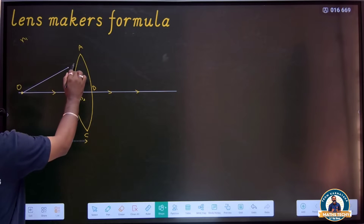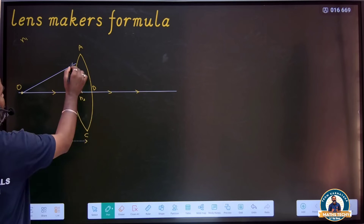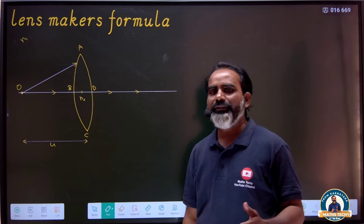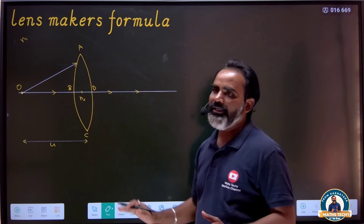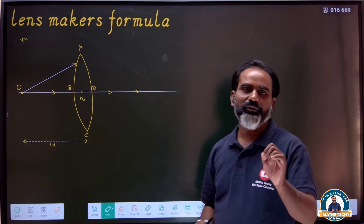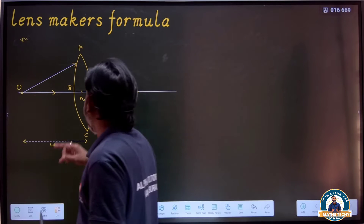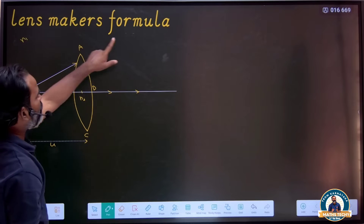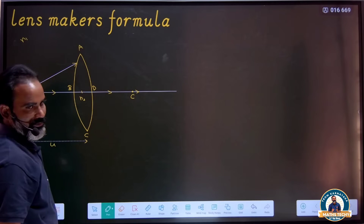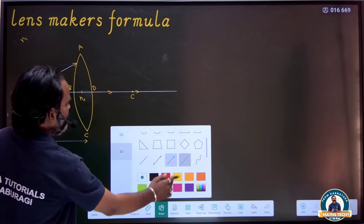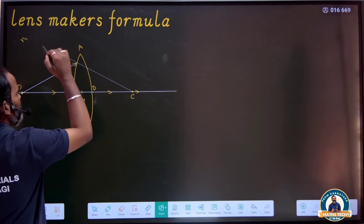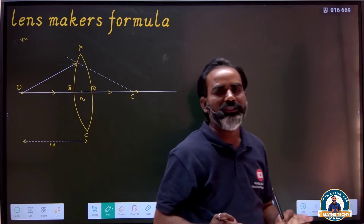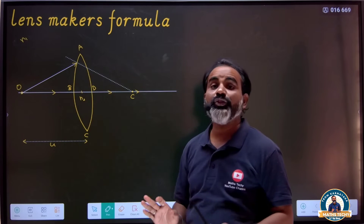One ray is incident here. If I want to make a bending, I want to draw a normal. It is a perpendicular line, but for a spherical surface, to draw the normal we draw a line through the center of curvature. This ray is refracted. Since we are going from rarer to denser medium, as per the rule, that ray should bend towards the normal.